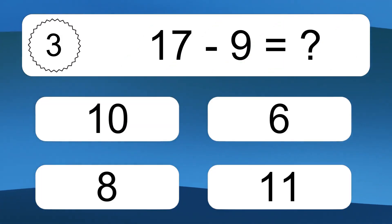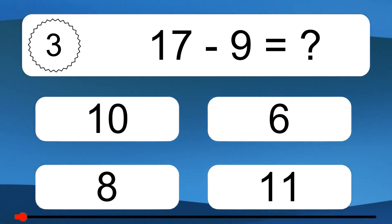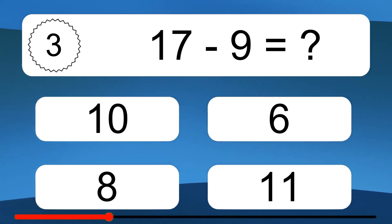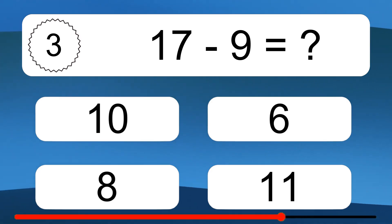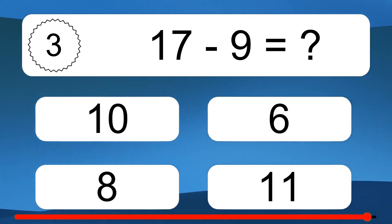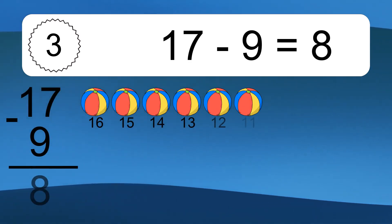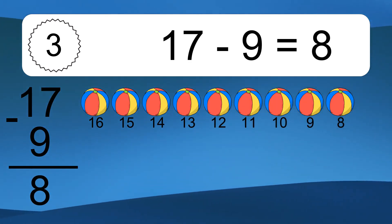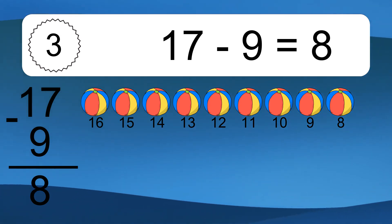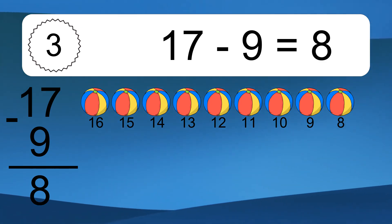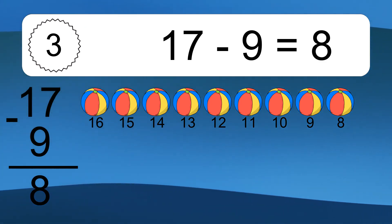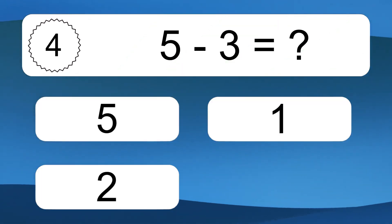17 minus 9 equals what? 17 minus 9 equals 8. Let's count it. 16, 15, 14, 13, 12, 11, 10, 9, 8.